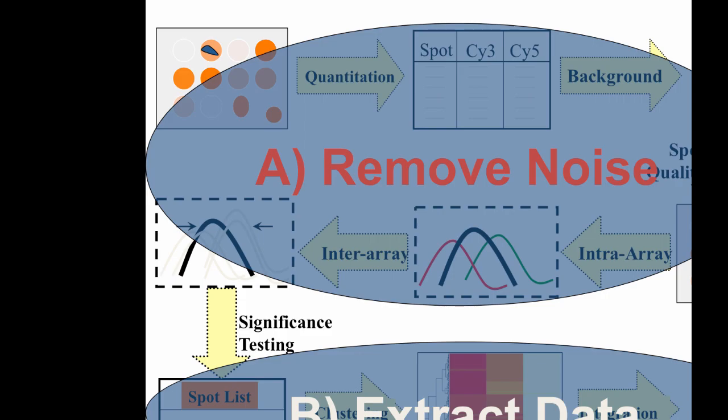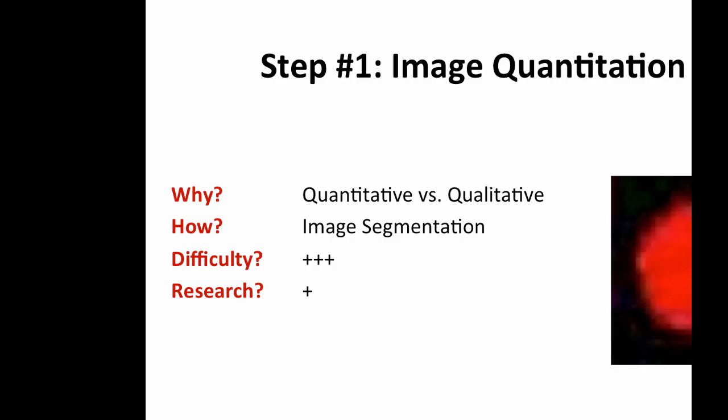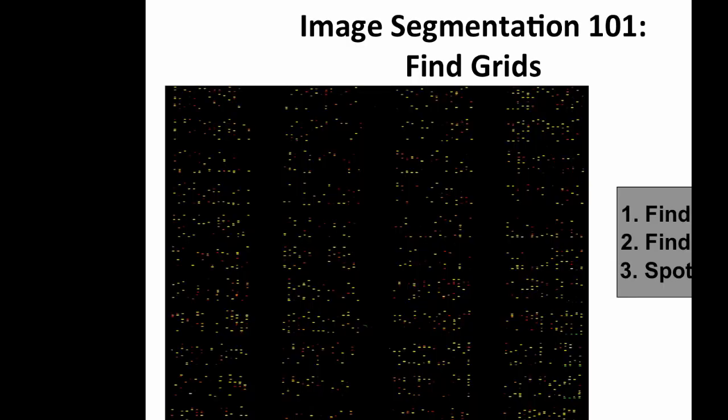We'll systematically go through preprocessing steps one at a time: what do they do, what are they trying to accomplish, and how well do they work. The first step is image quantitation. You start with an image and need to convert it into numbers using image segmentation algorithms — a fairly difficult thing to do and not very well researched. You can imagine looking at the array image and eventually seeing grid patterns, which is exactly what grad students did initially, placing grids one at a time.